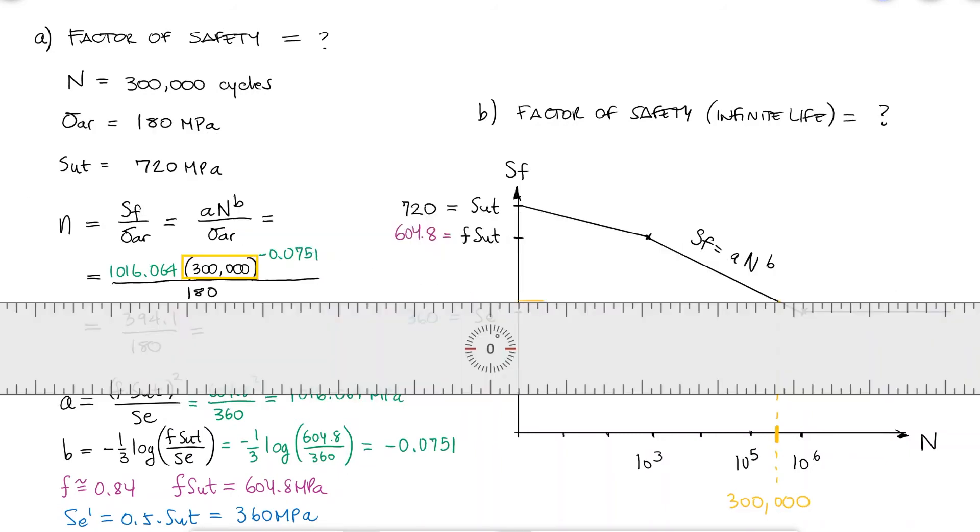The factor of safety would therefore be the fatigue strength for 300,000 cycles divided by the completely reversed stress of 180 MPa.